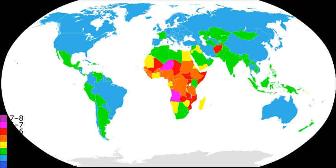While population planning can involve measures that improve people's lives by giving them greater control of their reproduction, a few programs, most notably the Chinese government's one-child policy and two-child policy, have resorted to coercive measures.